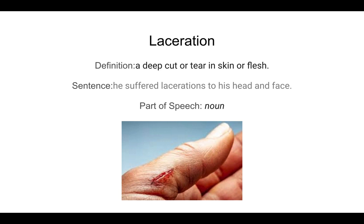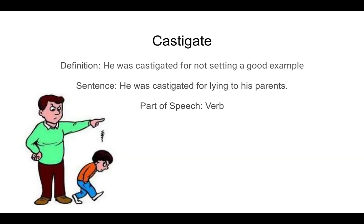The next word is castigate, spelled C-A-S-T-I-G-A-T-E. Castigate means to reprimand someone severely. Sentences for castigate: he was castigated for not setting a good example, and he was castigated for lying to his parents. If you remember the definition of reprimand from a previous video, good job — if not, reprimand means to express strong disapproval of someone in an unhappy, disappointed way. Part of speech is a verb. In the picture, the older person is castigating the younger one.